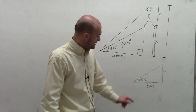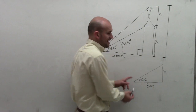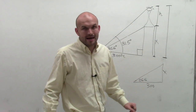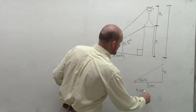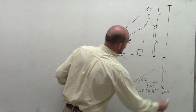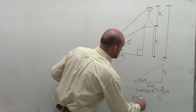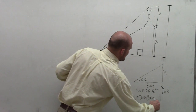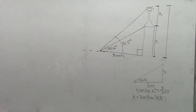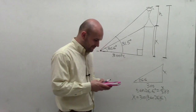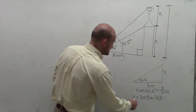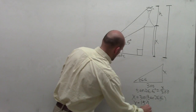To figure out what x is, we look at our problem and say: I have the opposite side and the adjacent side, and I have my angle. The trigonometric function that uses opposite over adjacent is tangent. So the tangent of 26.6 degrees equals the opposite over the adjacent. Therefore, x equals 300 times the tangent of 26.6 degrees. Using the calculator, 300 times tangent of 26.6 degrees gives us x equals 150.23.